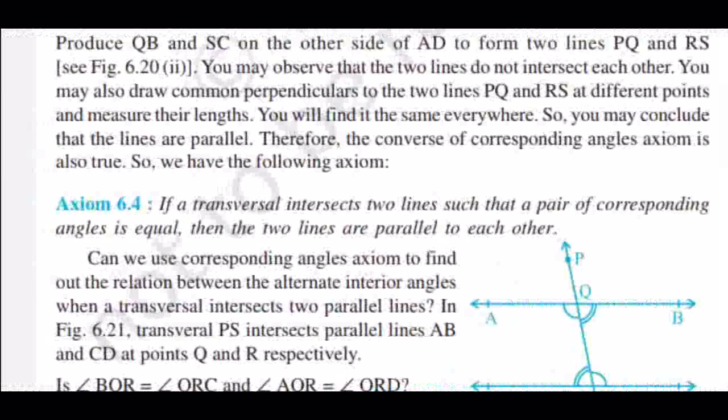The next axiom is just the opposite of this one. The corresponding angles axiom means: if two parallel lines and a transversal are present, then the corresponding angles are equal. The next axiom is: it is not given that the lines are parallel. If a transversal intersects two lines such that the corresponding angles are equal, then the lines will be parallel.